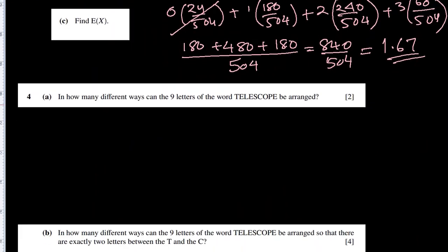Question 4: in how many different ways can the nine letters of the word TELESCOPE be arranged? Nine letters can be arranged in 9 factorial ways, but E appears three times so we divide by 3 factorial. All other letters T, L, S, C, P are non-repeating.